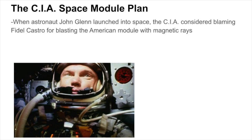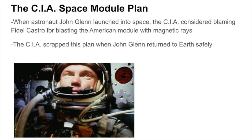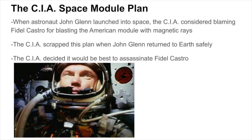When astronaut John Glenn launched into space, the CIA considered blaming Fidel Castro for blasting the American module with magnetic rays. This plan was eventually scrapped when John Glenn came back to Earth safely. After this plan failed, the CIA decided it would be best to deal with Castro by assassinating him rather than by undermining his political influence.